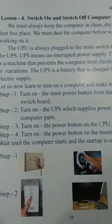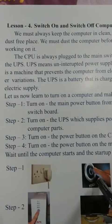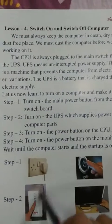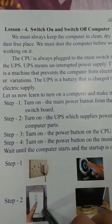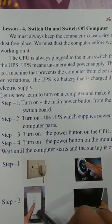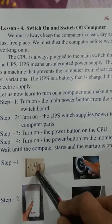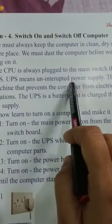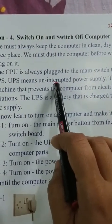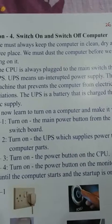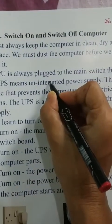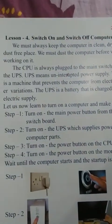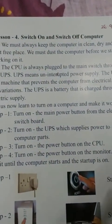The CPU is always plugged to the main switch through the UPS. CPU — the central processing unit — is always connected to the main switch through the UPS. The CPU is connected to UPS and it is connected to the main switch. UPS means uninterrupted — U-N-I-N-T-E-R-R-U-P-T-E-D.